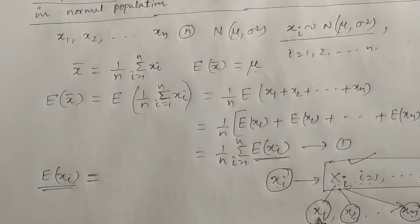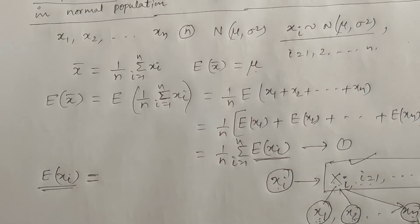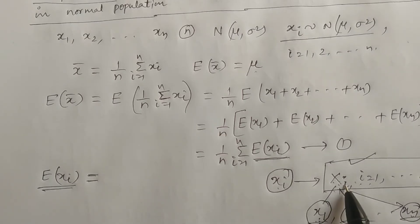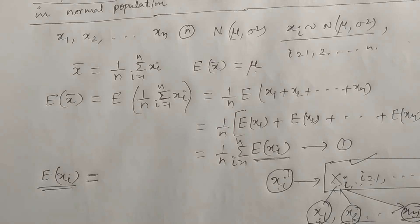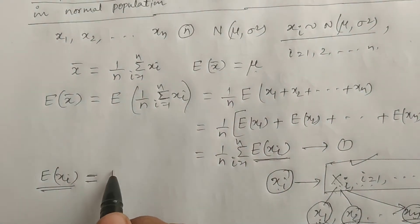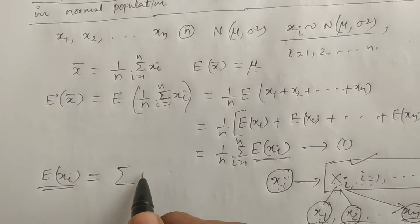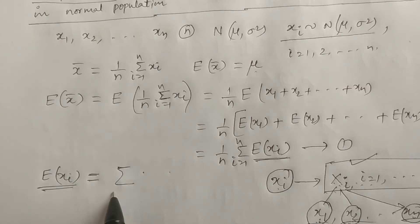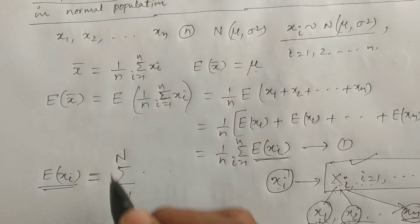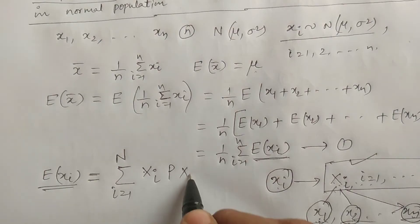Small x1 is one of the values of capital X. Small x2 is one of the values of capital X. Every possibility of small x's is nothing but one of the capital X values. Therefore the possibilities for expectation of X is summation of Xi times P of Xi, for i equals 1 to capital N — that is, each capital Xi multiplied by probability of capital Xi.